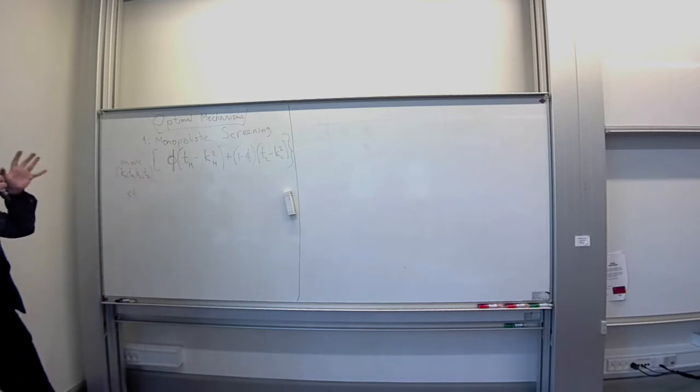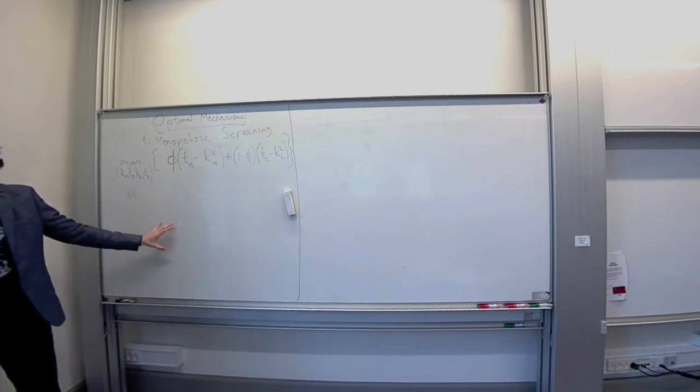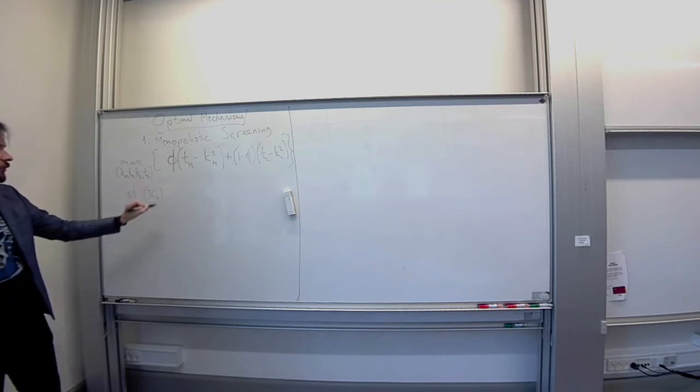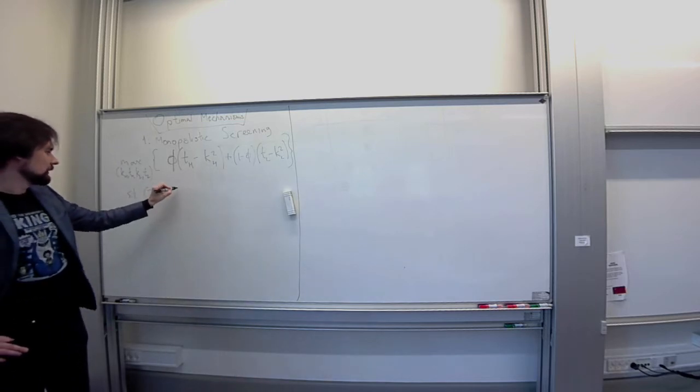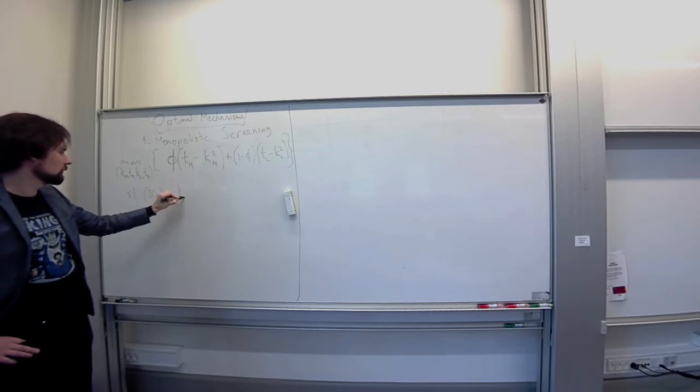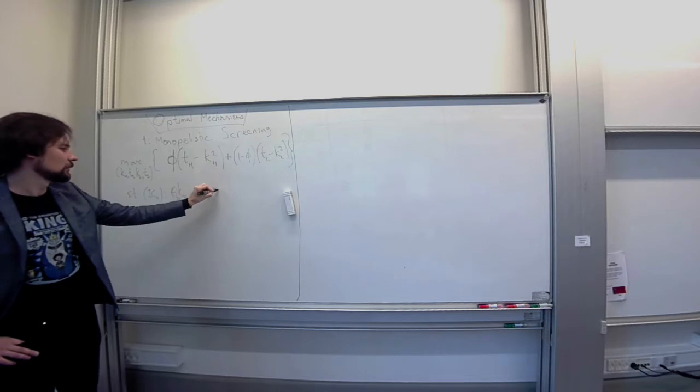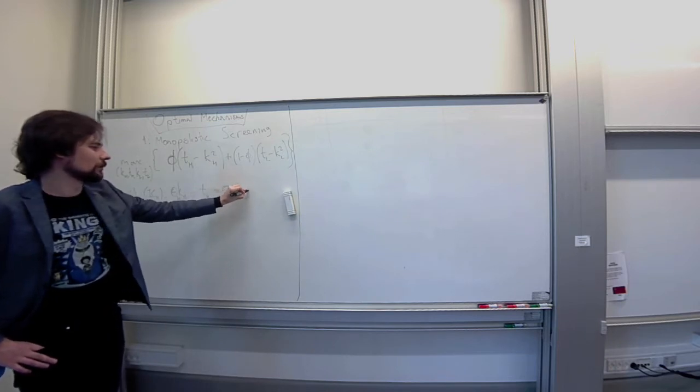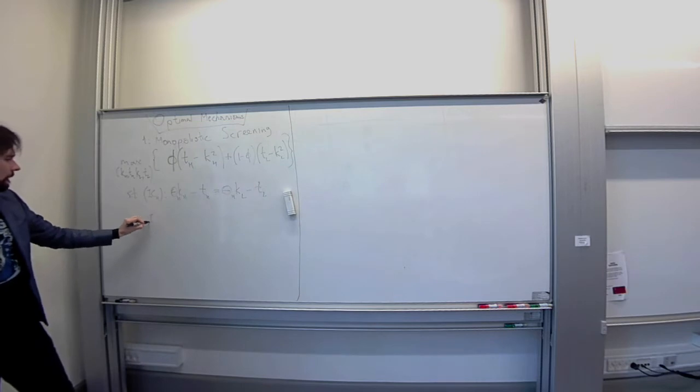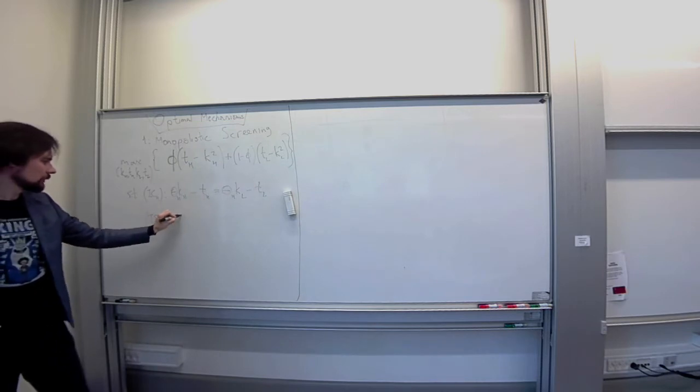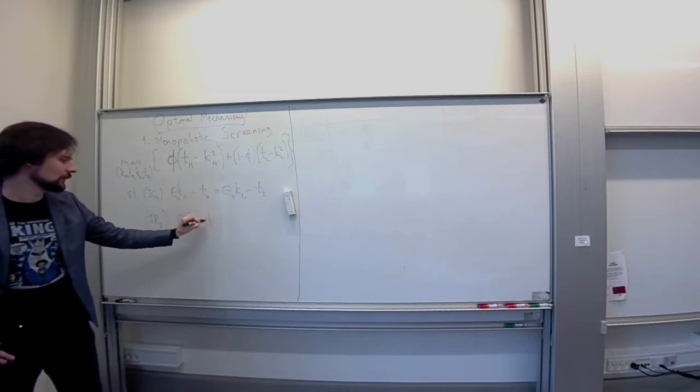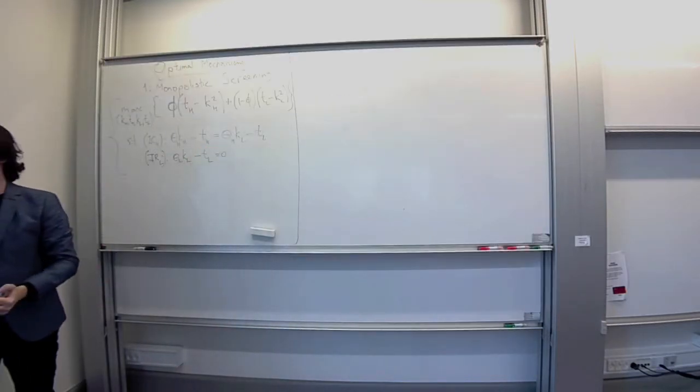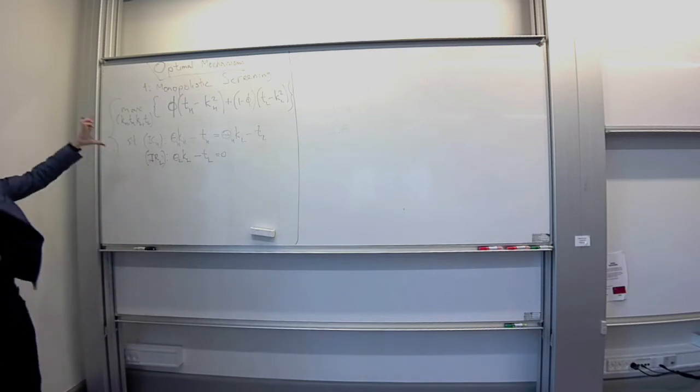We just looked at the problem very carefully and we saw that we do not need to solve this full problem with four constraints. We can substitute it with a simpler problem. The constraints that we ended up with were as follows. K theta H minus TH should be equal to theta H times KL minus TL. And IR of the low type: theta L times KL minus TL must be equal to zero.